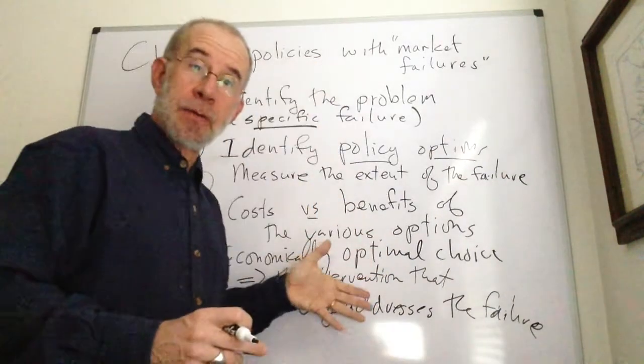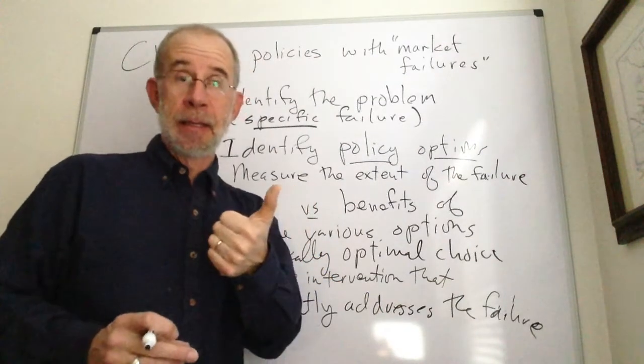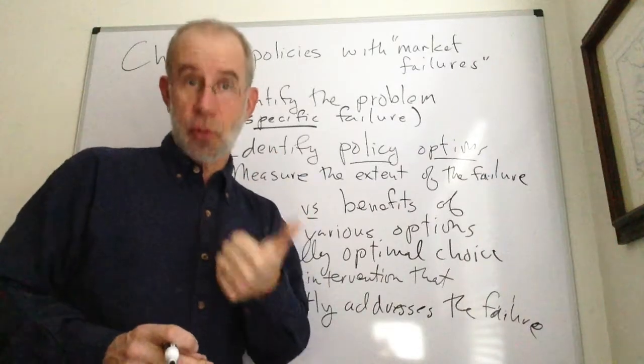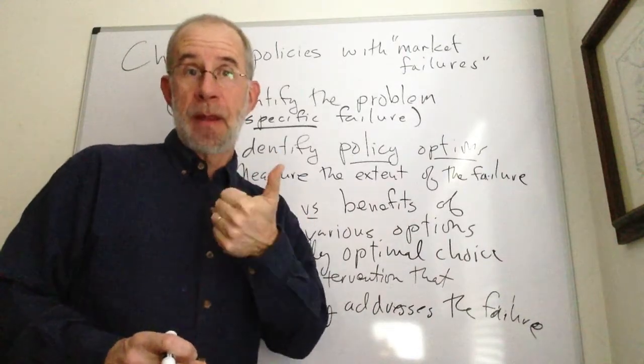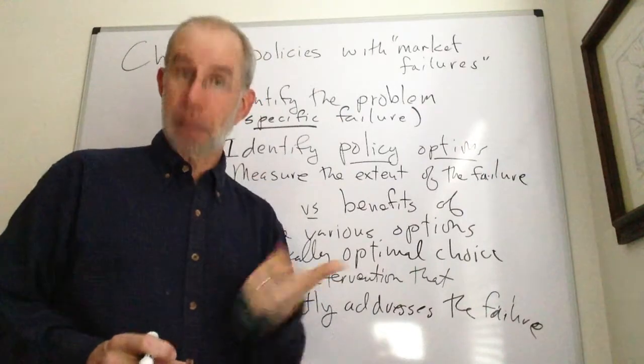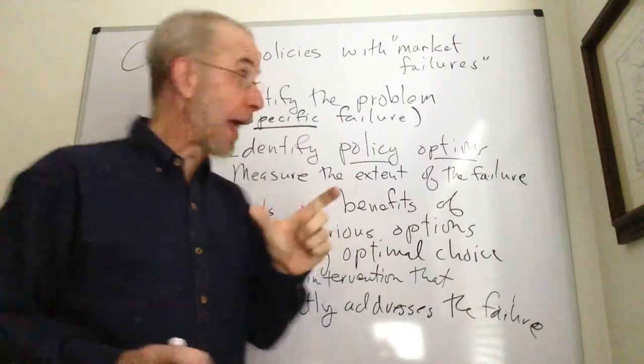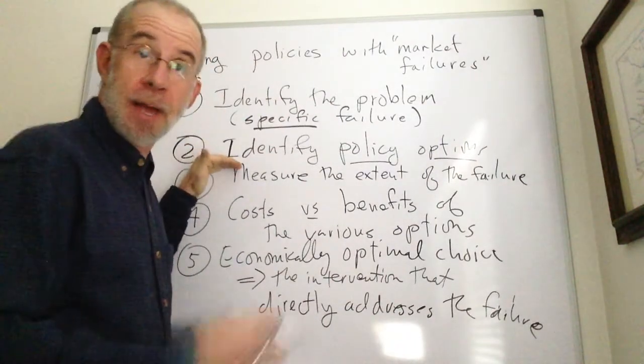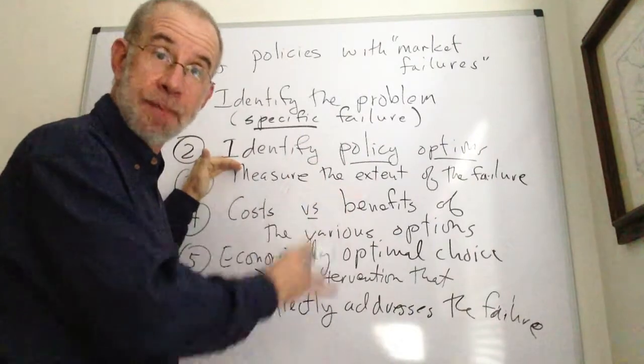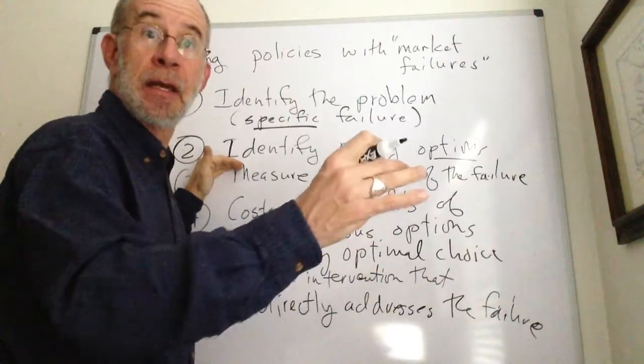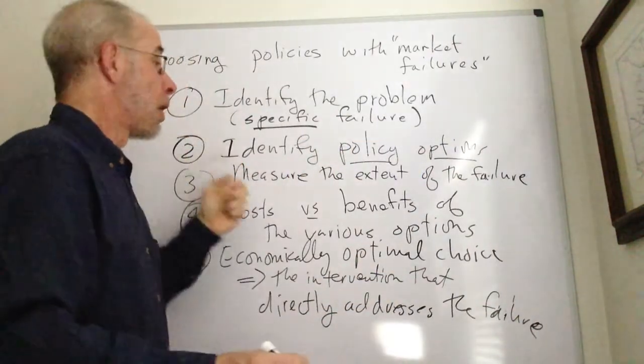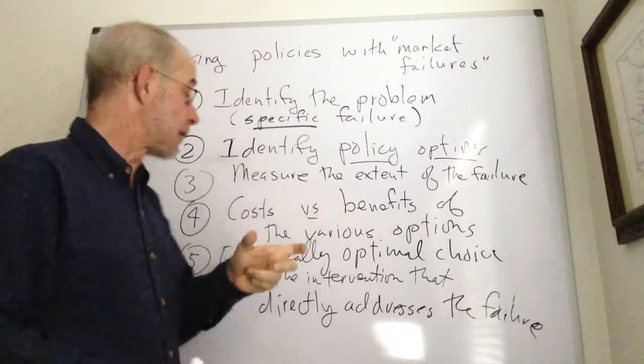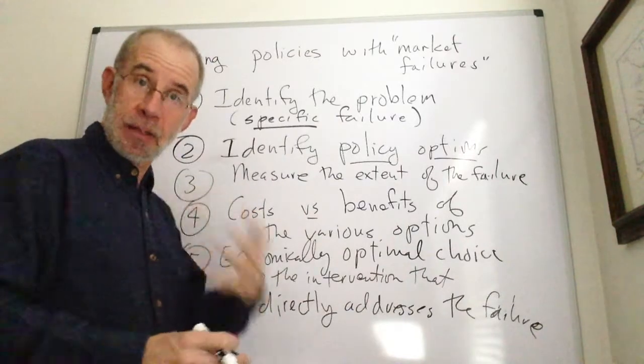Now, in other videos that I've got, when we, for example, look at, in a trade context, the optimal choice in facing a foreign monopolist, then we identify the problem, that there's a foreign monopolist, we identify the policy options that was import subsidy, import tax, a price minimum, we, at least in principle, thought about the extent of the problem, the cost versus benefits, and so forth.